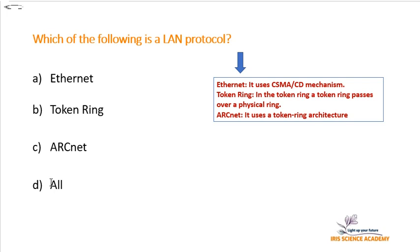Ethernet uses the CSMA/CD mechanism, which stands for Carrier Sense Multiple Access Collision Detection. Whenever more than one device starts sharing data over the same shared channel, it can cause a collision. This mechanism sends a jammer signal and stops all devices from sharing their data, then resets the counter. Each device is given a different number in sequence as per their priority, and they are only allowed to share data when their turn comes.